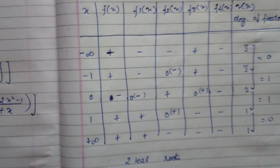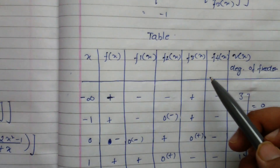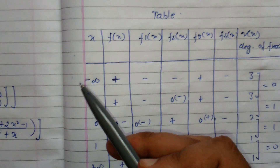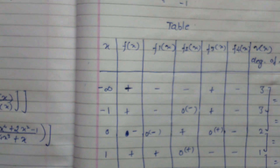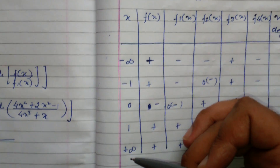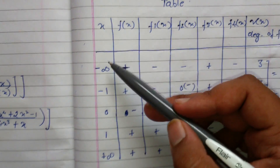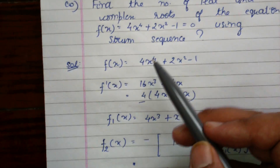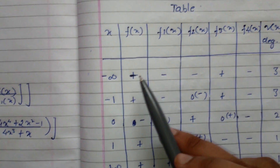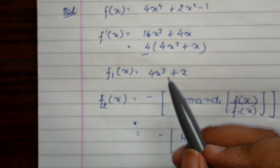The next step is to make a table. The table has columns for x, f(x), f1(x), f2(x), f3(x), f4(x), and V(x) — the number of sign changes. For x values, we choose minus infinity, -1, 0, 1, and plus infinity for simplicity. We evaluate the sign of each function at these points. For example, at x = minus infinity, f(x) gives a positive sign, and f1(x) gives a negative sign.